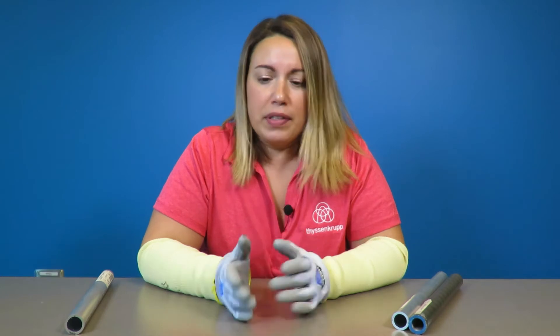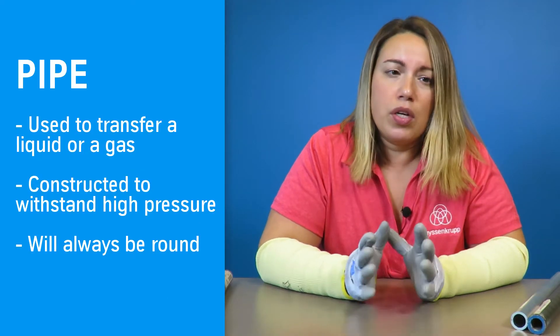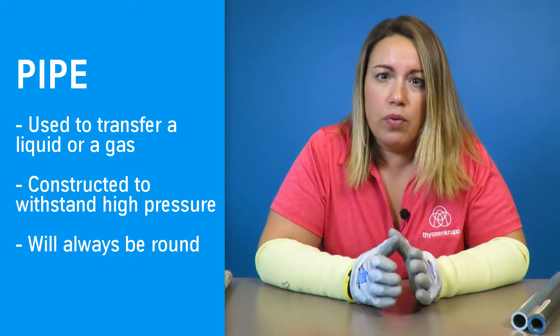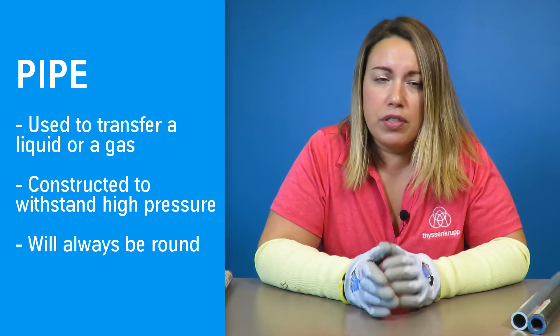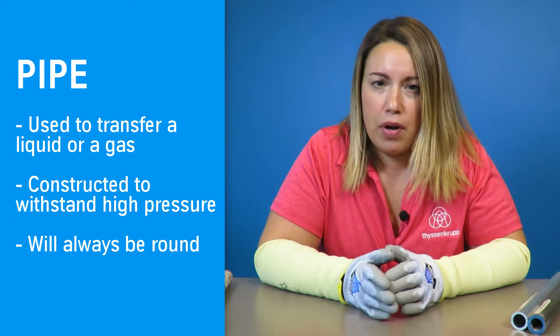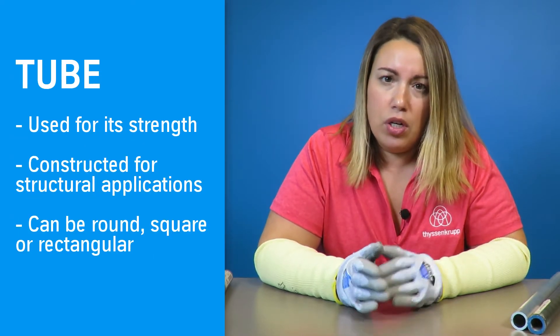The major difference between these two are basically the application that it's used for and the way it is measured. A pipe is typically used to transfer liquid or a gas. It's constructed to withstand high pressure. Pipes are always going to be round.